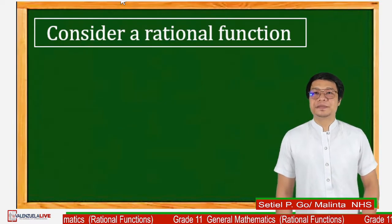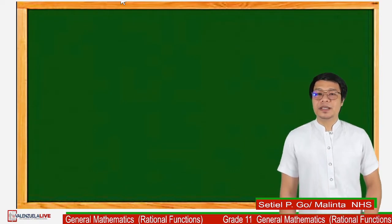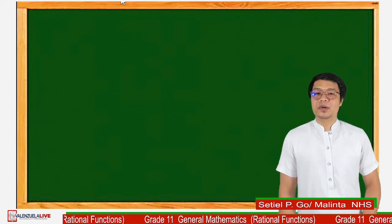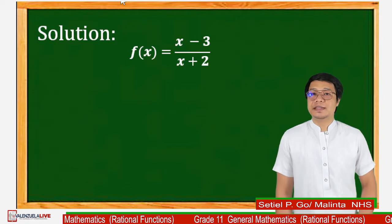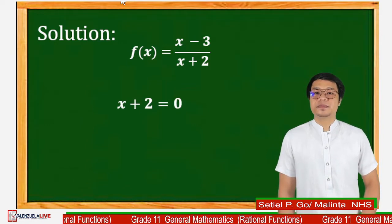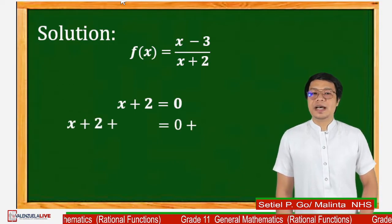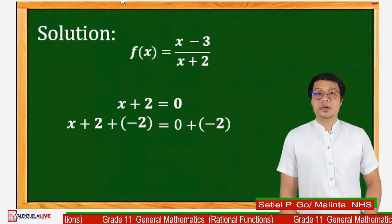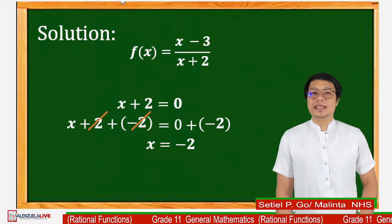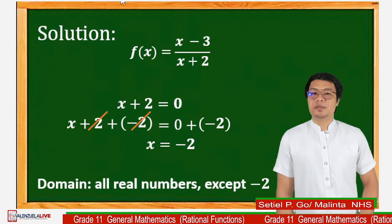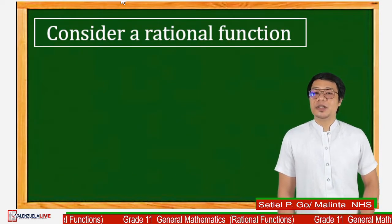Let us consider the following example: f(x) = x minus 3 over x plus 2. Considering the definition of the domain, wherein all real numbers x except those for which the denominator is 0, our main concern is the denominator x plus 2 equated to 0. Using the addition property of equality, add negative 2 on both sides. Since 2 plus negative 2 equals 0, the resulting equation is x = negative 2. Therefore, the domain is all real numbers except negative 2. When we substitute negative 2 into the function, the result is undefined.